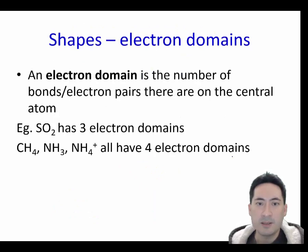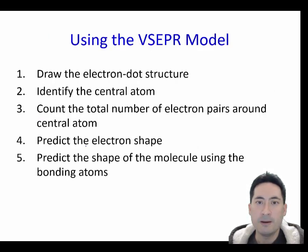So these are based on electron domains. There are three electron domains here. You're not going to know that until you draw the Lewis structures. So let's move quickly on to those. These are the rules. Draw the electron, Lewis electron dot structure. Identify the central atom. Count the total number of electrons and pairs around the atom. Predict the electron shape. Predict the shape of the molecule using bonding atoms. So the shape is determined by the bonding bonds and not the electron pairs, the free electron pairs.